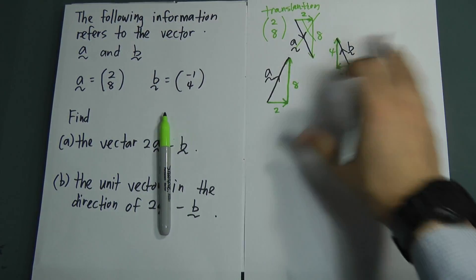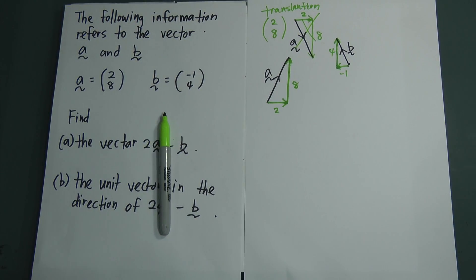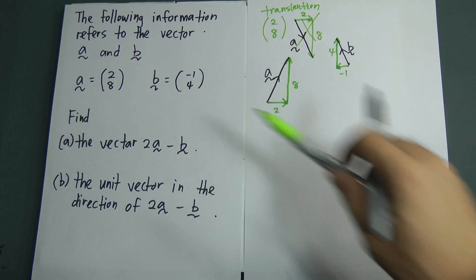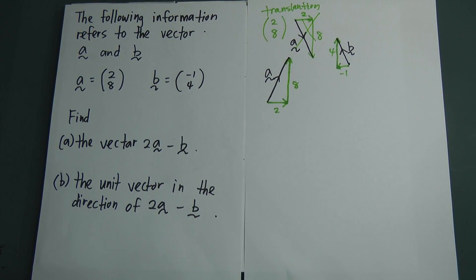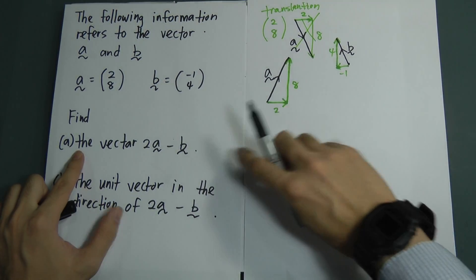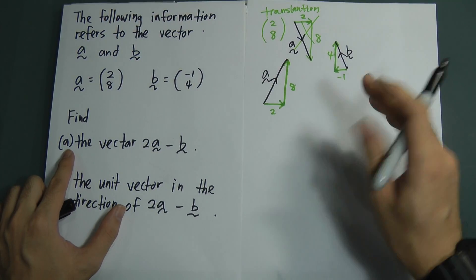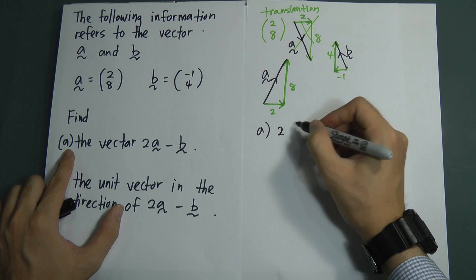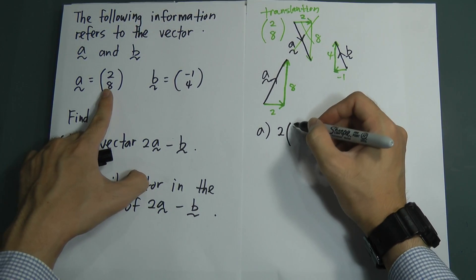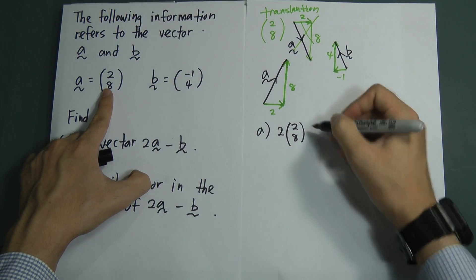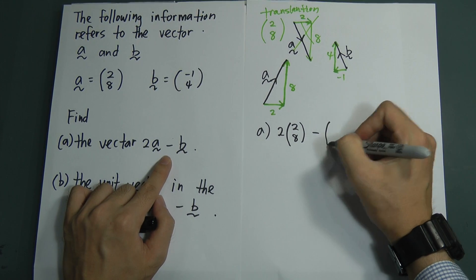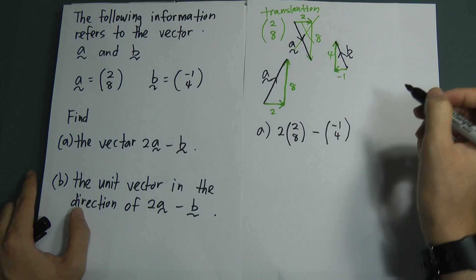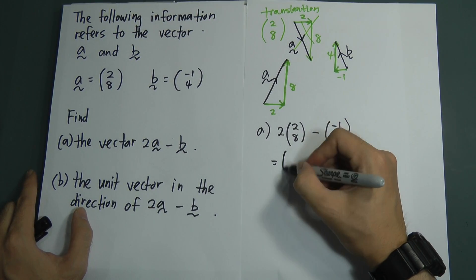You do not need to draw these diagrams in the exam — I just explained them to help you understand the meaning of the components. Now, part (a) asks you to find the vector 2a minus b. This is straightforward: substitute a = (2, 8) and b = (-1, 4) into the expression.